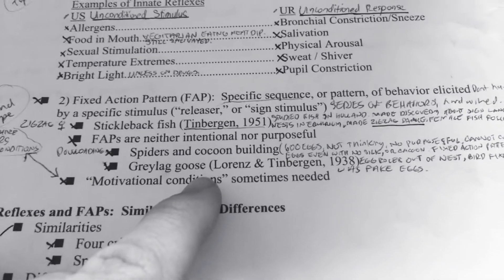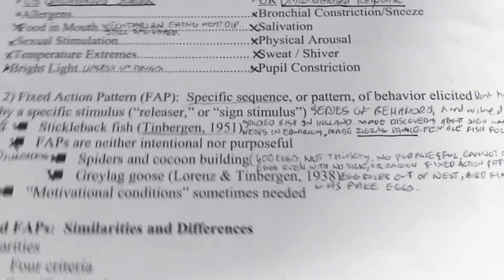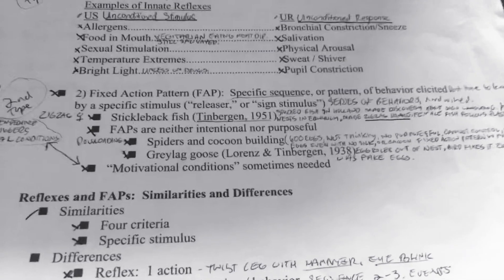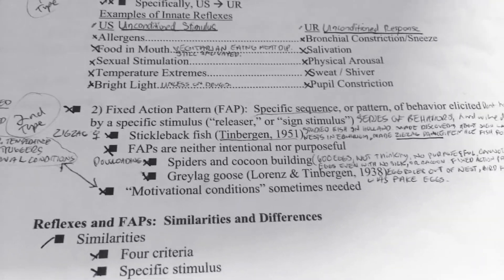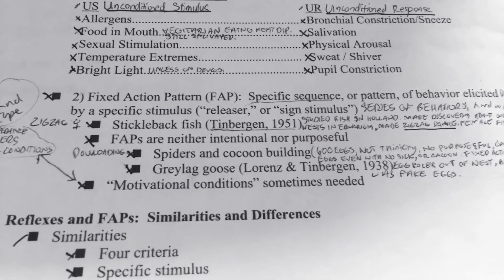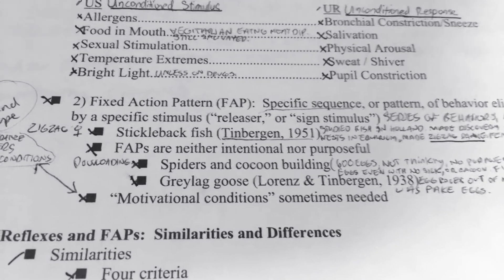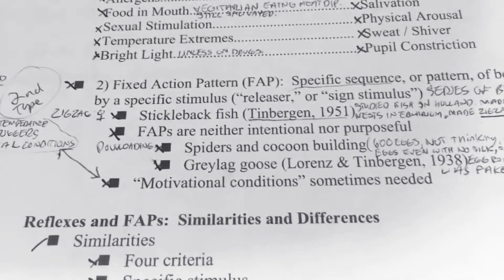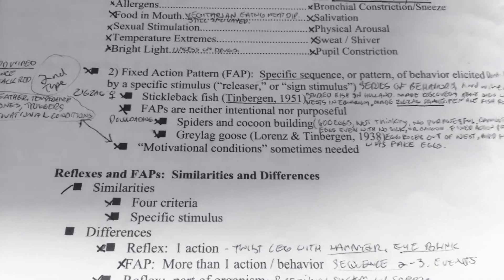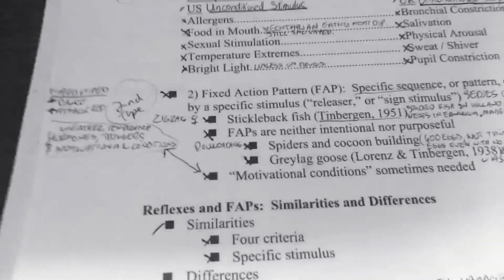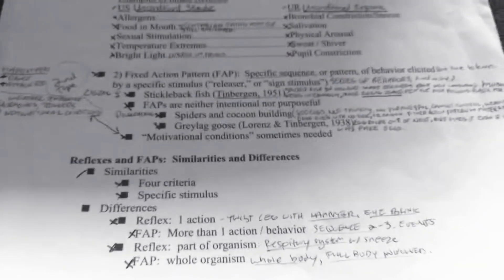A goose has the same type of fixed action pattern — if it loses its egg, it will quickly go back and try to get the egg back into the nest. Scientists have even replaced the egg with a fake egg, and the goose will naturally go back and put it in the nest. Motivational conditions such as weather, temperature, and hormones can also trigger a fixed action pattern.